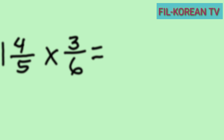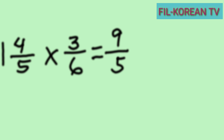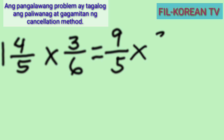Now let's change one and four-fifths into an improper fraction. We will multiply the denominator five and the whole number one, then add the numerator four. So five times one equals five, plus four equals nine. Copy the denominator five, so the improper fraction of one and four-fifths is nine-fifths. Write the multiplier three-sixths.